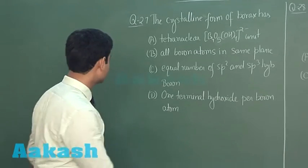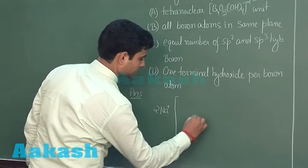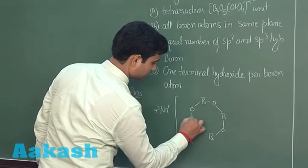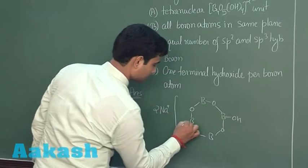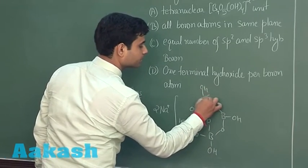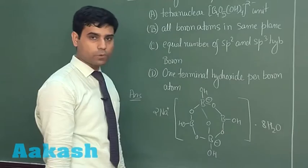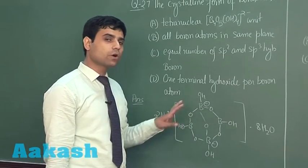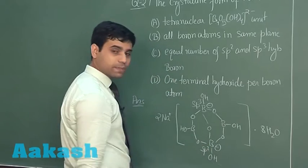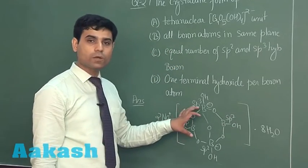Let us draw the structure of borax. This is the structure of borax. The four boron atoms cannot be in the same plane because the hybridization of this boron is sp3, and for this boron also the hybridization is sp3. This boron has sp2 hybridization and this boron has sp2 hybridization. So all four boron atoms cannot be in the same plane.